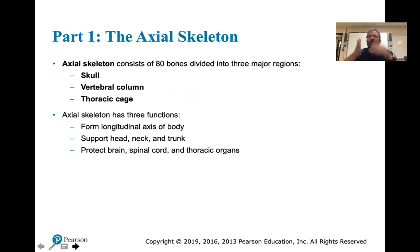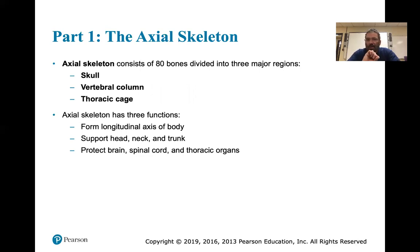The axial skeleton consists of 80 bones divided into three major regions. Today we'll talk about the skull, then the vertebral column, then the thoracic cage. The vertebral column encases your spinal cord, and both the skull and vertebral column are portions of osseous tissue encasing the central nervous system - your brain and spinal cord.